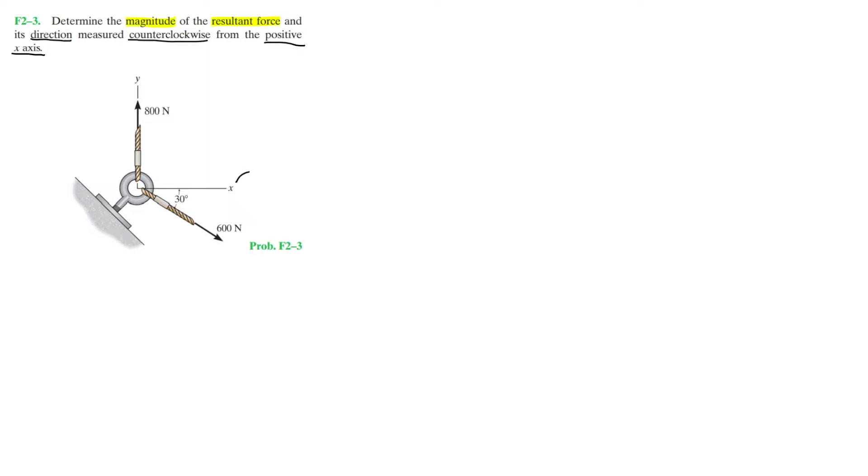Over here on the diagram this is the positive x-axis. Since we're asked to find the magnitude of the resulting force, we need to apply vector addition since the resulting force is going to be the sum of the two forces given. I call the 800 Newton force F1 and the 600 Newton force F2.